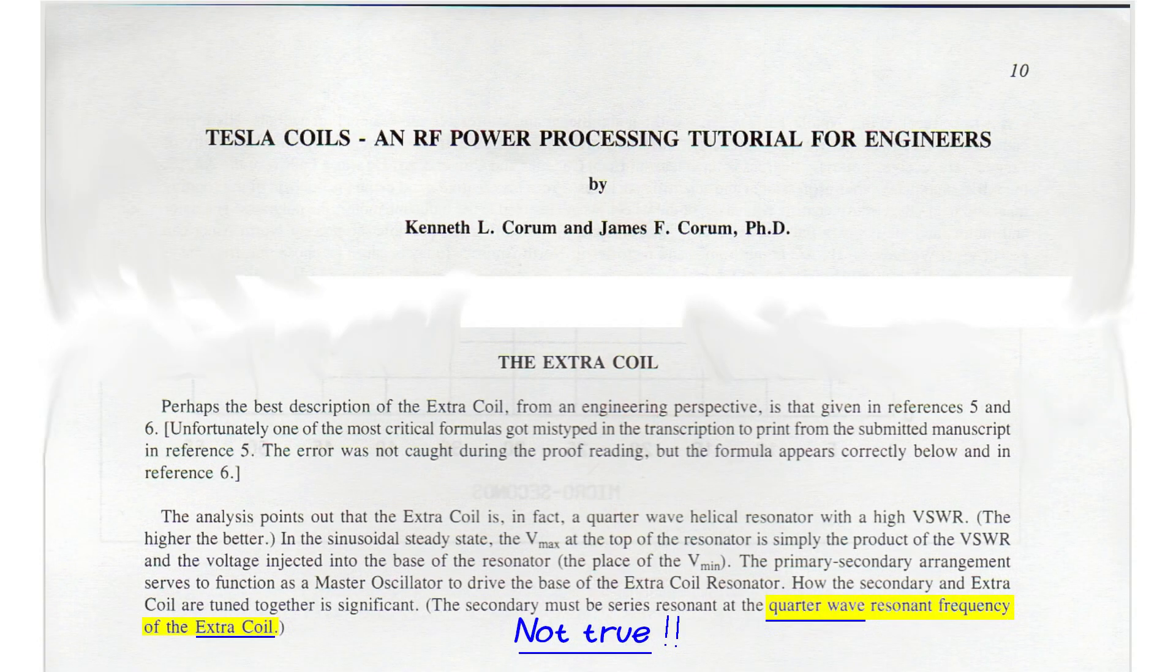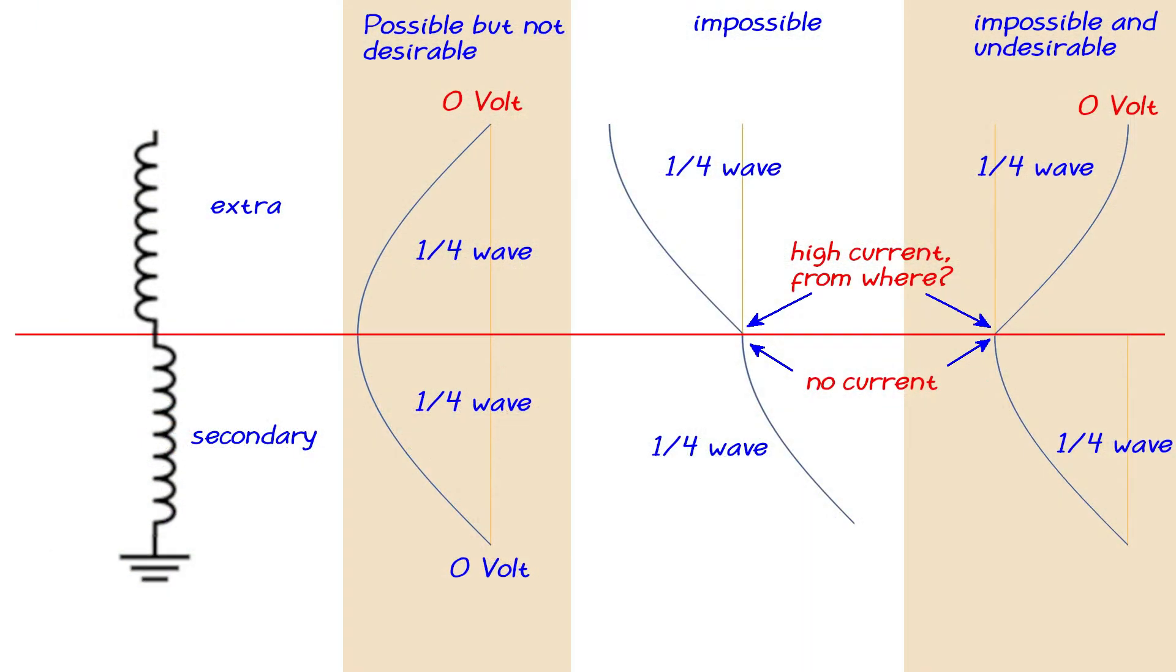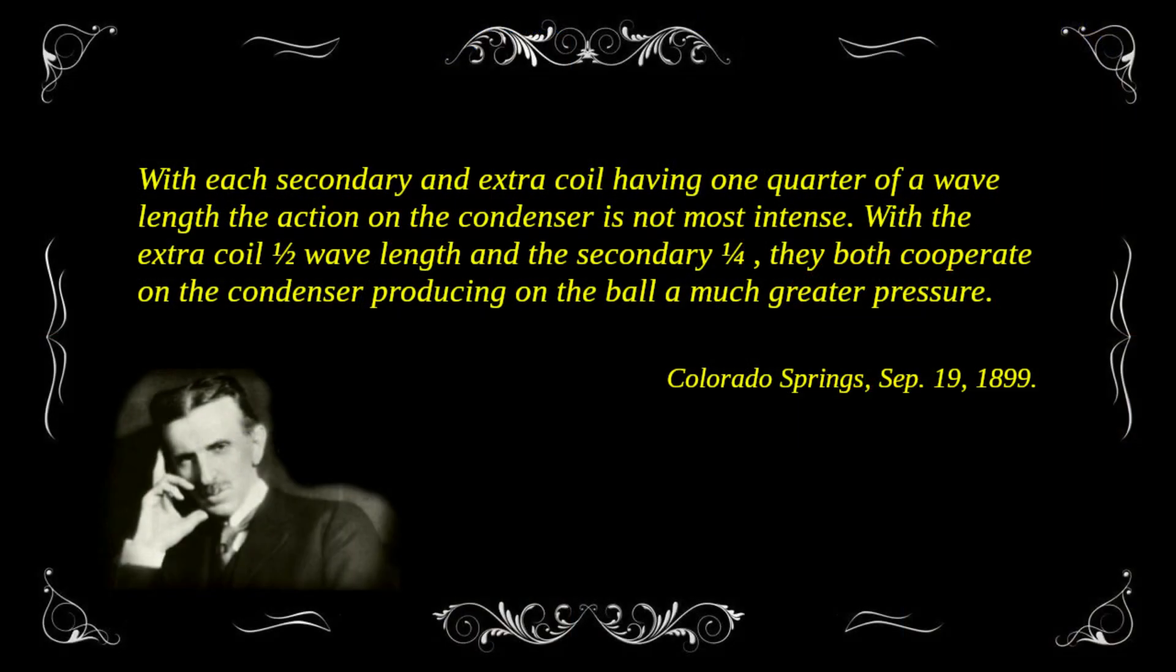Some people believe that the extra coil and the secondary are both quarter-wave resonators. What would this look like? I think it's clear that this won't get us the results that we are aiming for. It is also not what Tesla describes in his Colorado Springs notes. Tesla says that the extra coil should be a half-wave resonator, which would look like this.